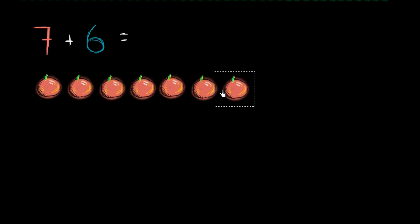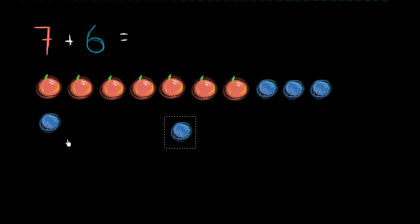And then to that, we're going to add six more objects. And let's say they're blueberries, and we care about the total amount of fruit. So one, two, three, four, five, and six. Six blueberries.